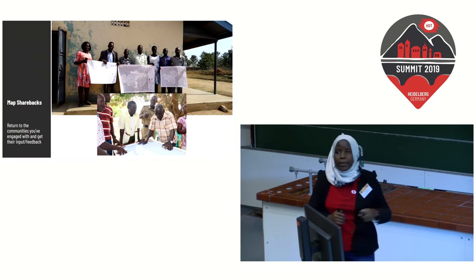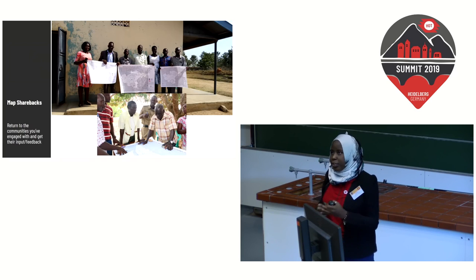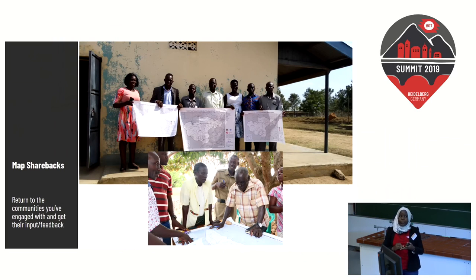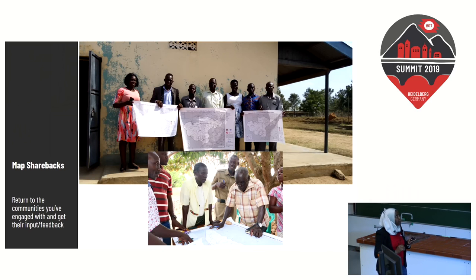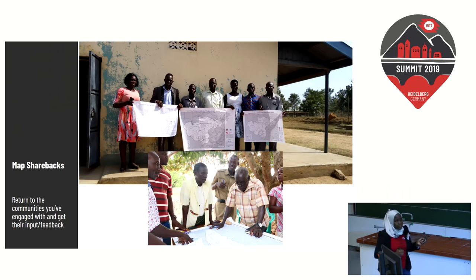Another key way to engage your community is at the end of your data collection: you want to take the results back to the community and provide an output. Because these are people who may not have access to computers or be able to digitally edit OSM, a paper map is very important. We always make sure to provide these paper maps and also use them when we need to update data — for instance, a water point that was not functional may have been fixed by the time the maps are returned, so we update the maps with the local community.